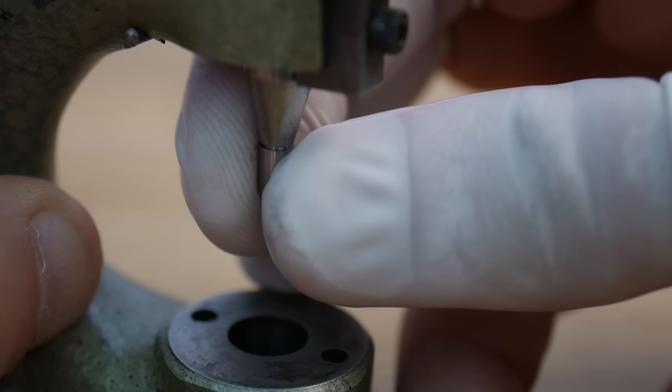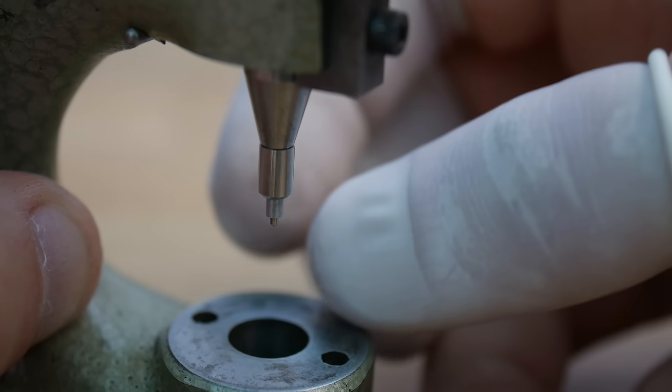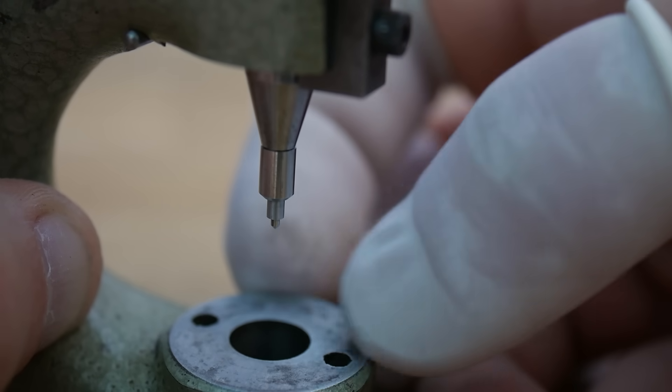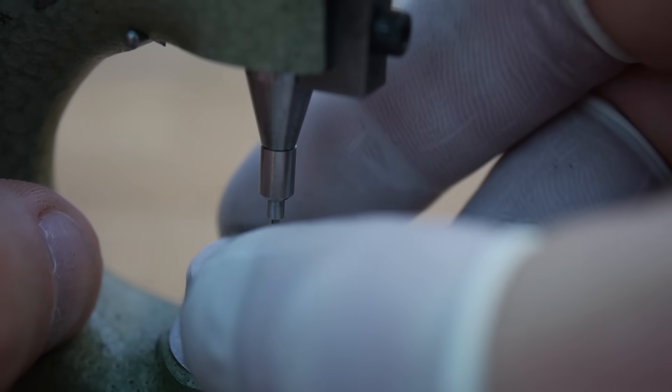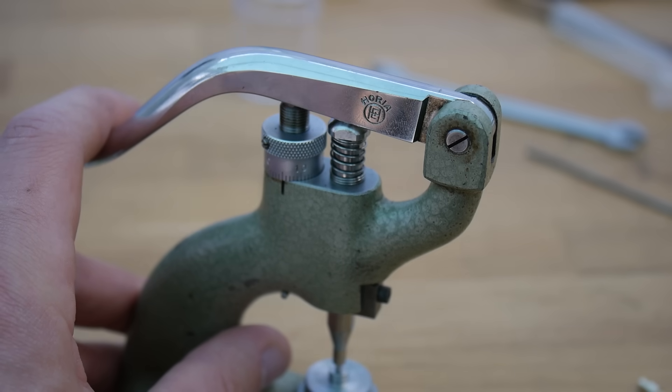The jewel can now be pressed into the setting in the dueling press. The spring-loaded points in the centre of the pusher helps centralise the jewel before it's pressed into position.